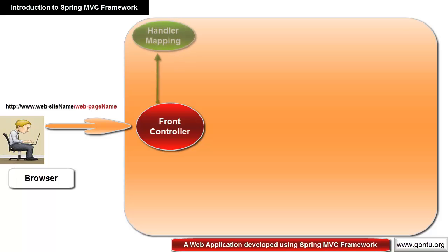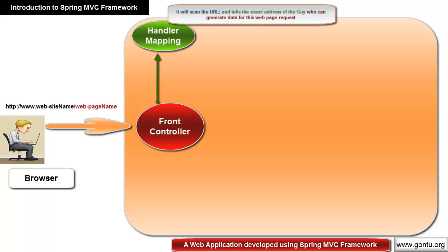Immediately after getting the request, the front controller passes it to a helper called the handler mapping. Its job is to tell the front controller what the request is all about. It scans the URL and tells the front controller the complete address of the component that can generate data for the requested web page. This is similar to someone asking you for the exact address of a gift item shop, and you telling them the address of the best shop in the area based on what they want to purchase.